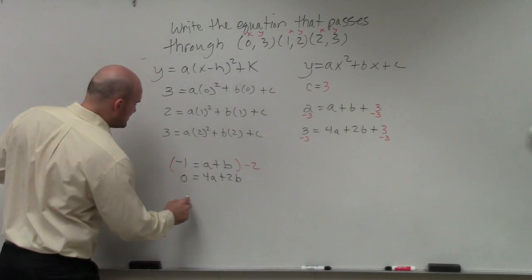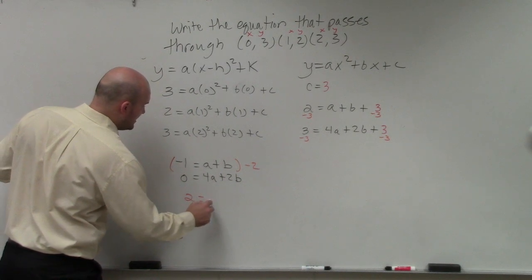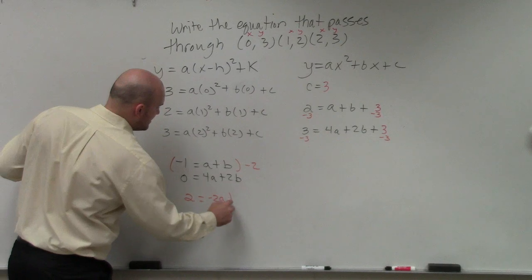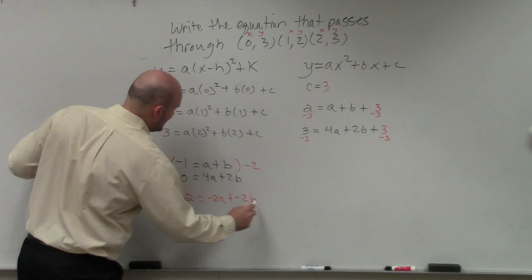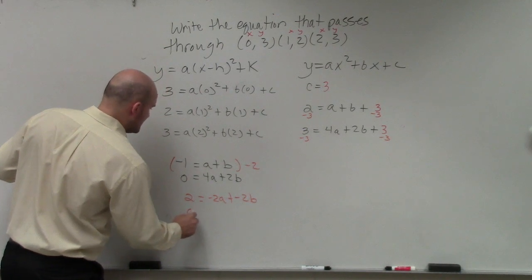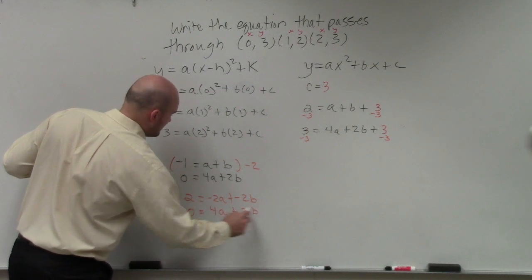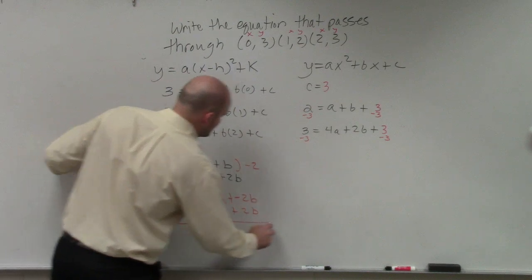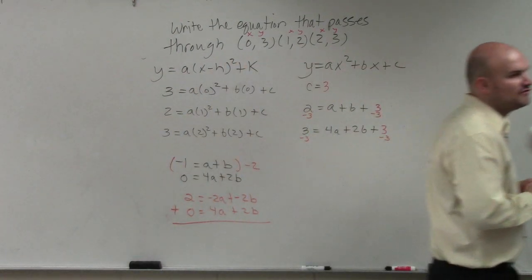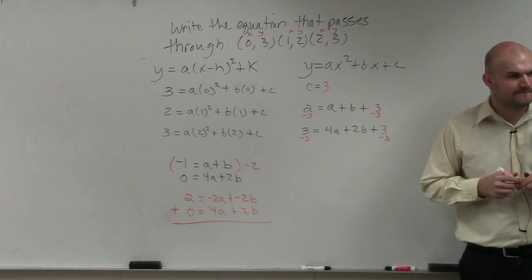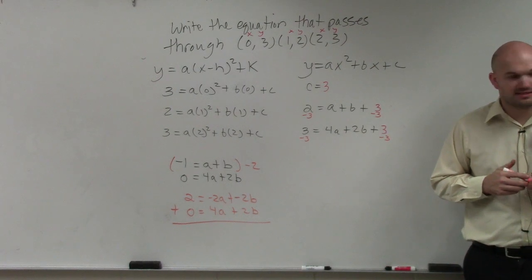By doing that, I now obtain positive 2 equals negative 2a plus negative 2b all over 0 equals 4a plus 2b. Do you guys see that b both has the same coefficients? One's positive, one's negative? You guys see that? Yes? Yes.